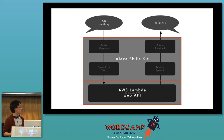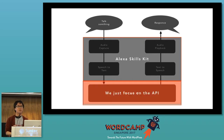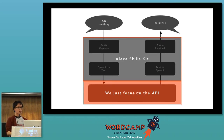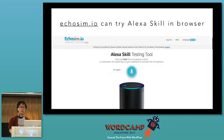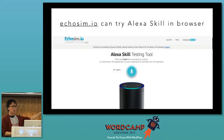We only need to create an AWS Lambda function or some web API. So if you're creating a voice application using Amazon Alexa, we only need to create some APIs — never mind converting voice, never mind capturing audio; Alexa handles those things. You can also easily try an Alexa skill in the browser by accessing echo.sim.io, which is a browser emulator for Alexa.